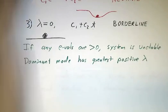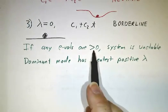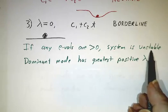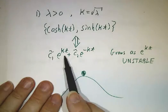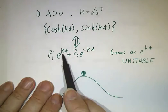So bottom line: if any of the eigenvalues are positive, the system is going to be unstable. Because if any of the eigenvalues are positive, you're going to have one term in your expansion that goes as e to a positive number times t.